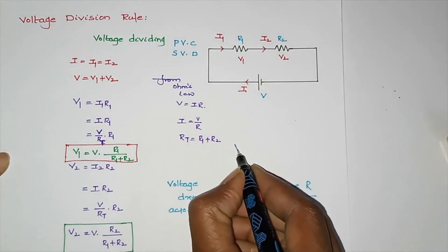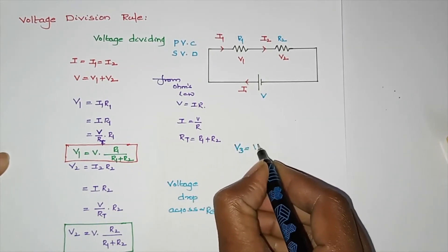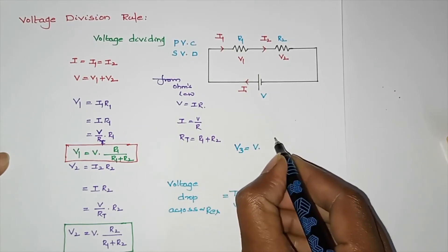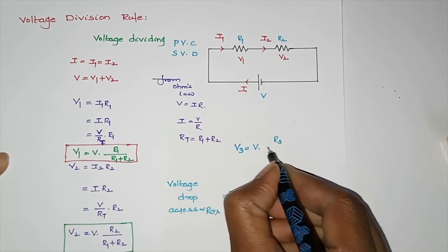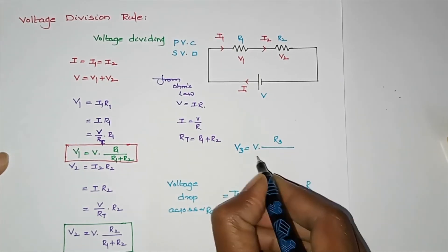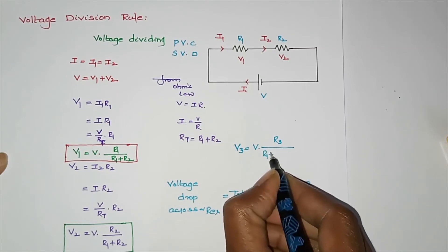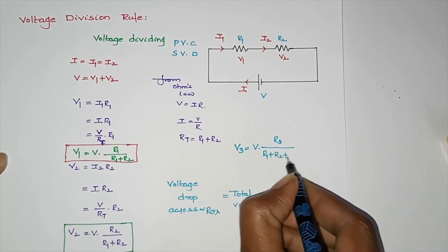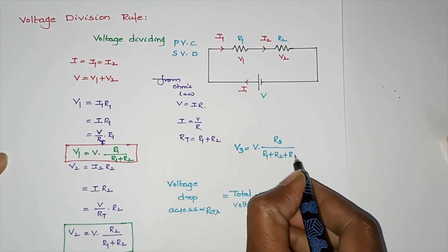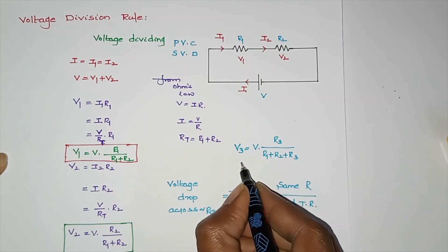For example, for a third component R3, V3 equals the total voltage multiplied by R3 divided by the sum of total resistance R1 plus R2 plus R3. In this case, we can see individual voltage values.